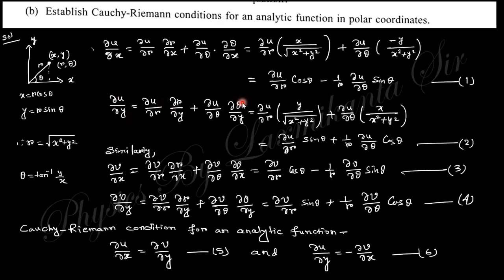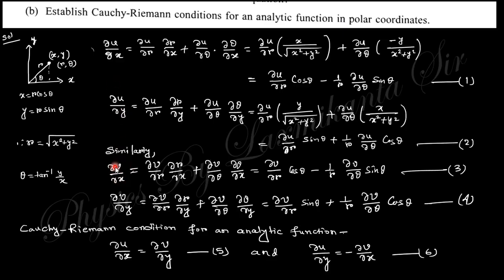Similarly, ∂u/∂y can be written in like form. From here you can find ∂r/∂x — that is (1/2)·(1/√(x²+y²))·2x, where the factors cancel out. So finally ∂r/∂x is obtained, and similarly ∂θ/∂x is obtained by taking the derivative. Finally, ∂u/∂x is obtained in full form, and similarly ∂u/∂y can be written. So ∂v/∂x and ∂v/∂y can also be written in this form.